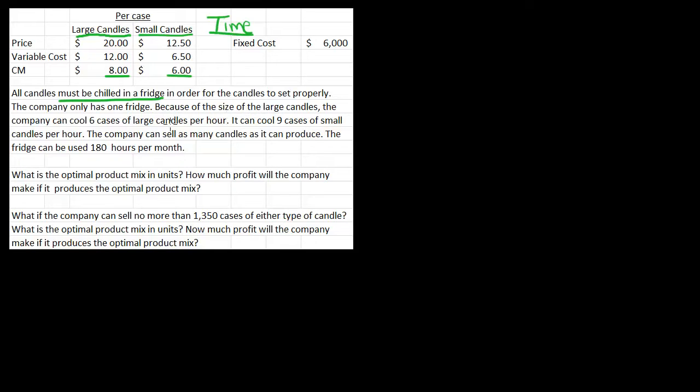Because of the size of the large candles, the company can cool six cases of large candles per hour. And it can cool nine cases of small candles per hour. The company can sell as many candles as it can produce. The fridge can be used 180 hours per month. So we only have 180 hours. And both of these types of candles need to go into that fridge.